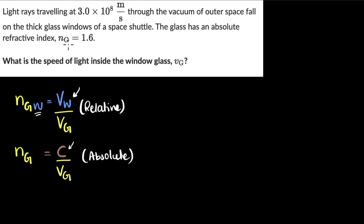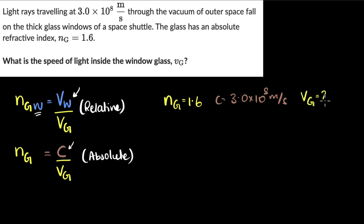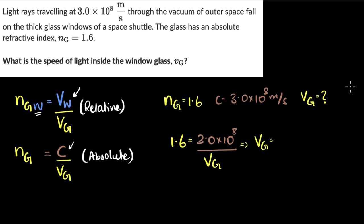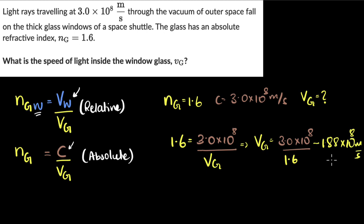So in the problem, the refractive index of glass with respect to vacuum is given as 1.6. Can you pause and try to solve this yourself? We are given the refractive index of glass as 1.6, and the speed of light in vacuum is 3.0 times 10 to the 8 meters per second. Using the absolute refractive index formula: 1.6 equals 3.0 times 10 to the 8 divided by Vg. Solving, Vg equals 3.0 times 10 to the 8 divided by 1.6, which gives 1.88 times 10 to the 8 meters per second. That's our answer.